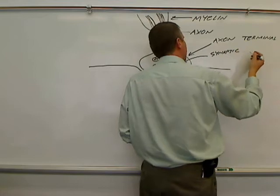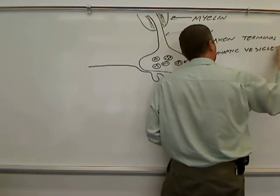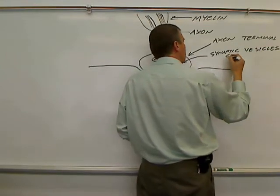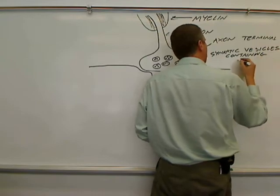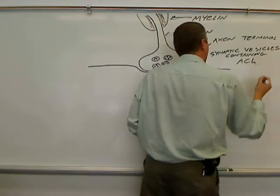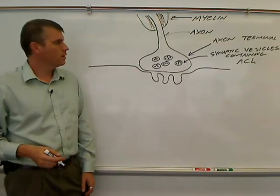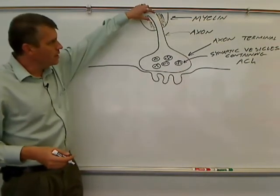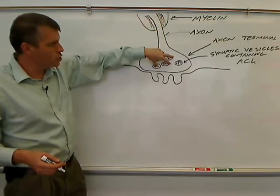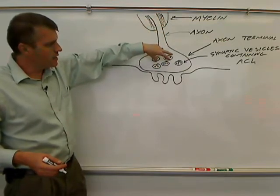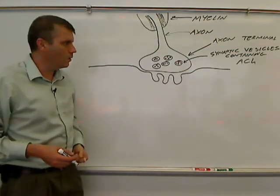So, synaptic vesicles containing ACH, which is short for acetylcholine. So we have the end of a neuron. This part is called the axon. It goes down here to the axon terminal. And inside the axon terminal, we have vesicles, and those vesicles contain acetylcholine.